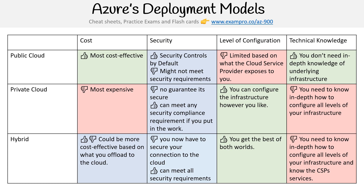Then below, we have the hybrid model. This could be more cost effective based on what you offload to the cloud and the cost of moving data back and forth. For security, you have more to secure, but technically some things are easier to secure on the cloud than in private — so maybe you get a boost in security. You're going to get the best of both worlds in terms of configuration. And for technical knowledge, you're going to need to know both the cloud and how to set things up on-premise — so that's the most work.